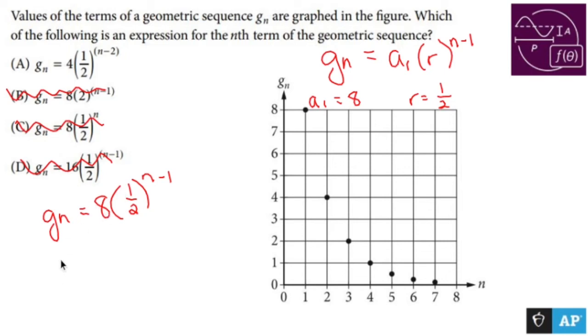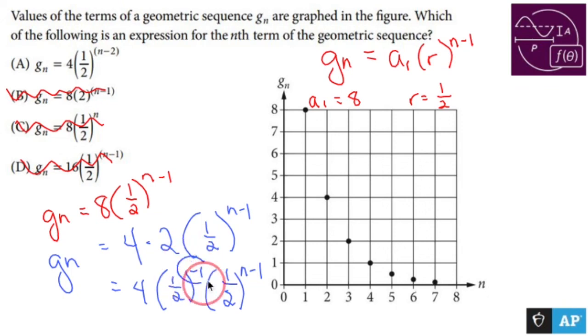Now, 8 can be written as 4 times 2, like so. And I'm going to keep writing the 1 half to the n minus 1. Now, what I can do is I can turn 2 into 1 half to the negative first power, which is then being multiplied to 1 half to the n minus 1. When you multiply terms of the same base, you add the exponents. So n minus 1 plus negative 1 is n minus 2. So this is the same as that.